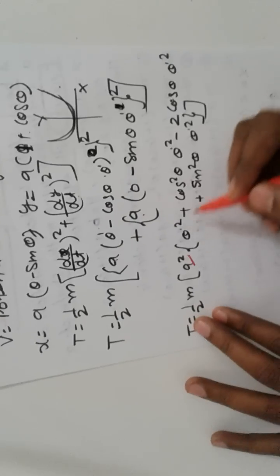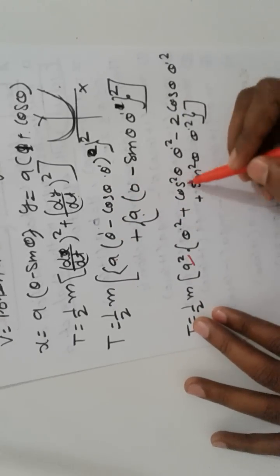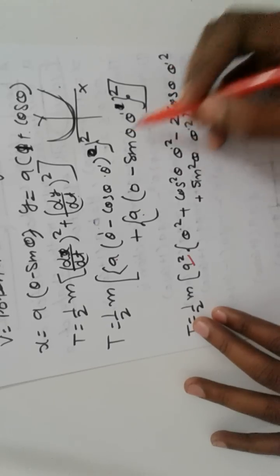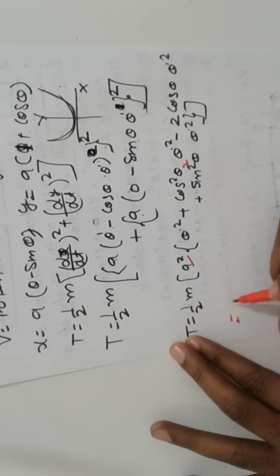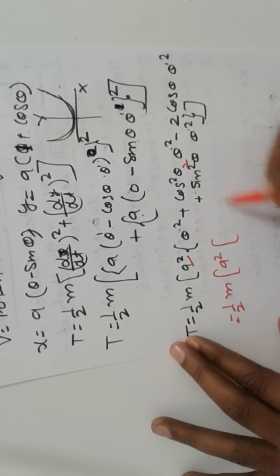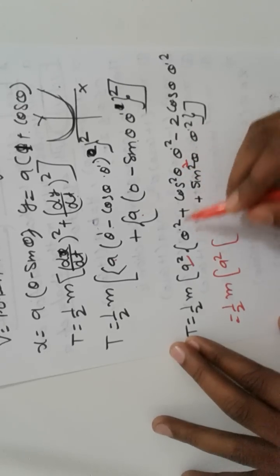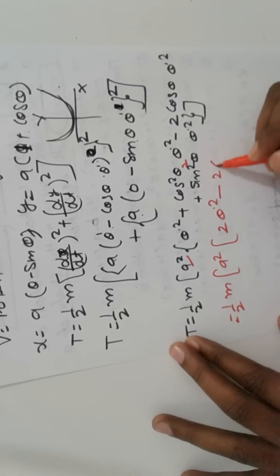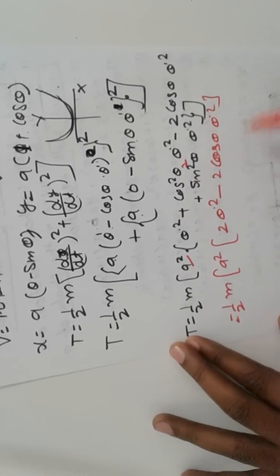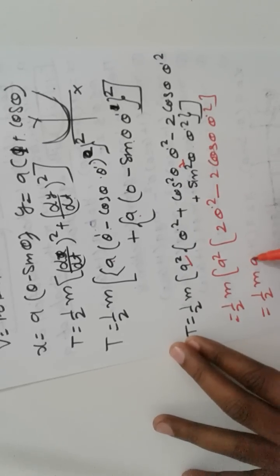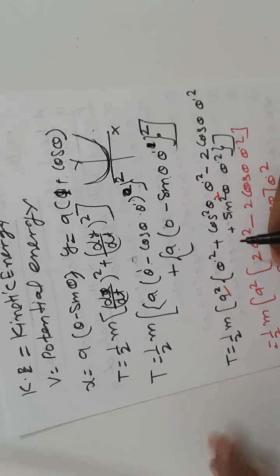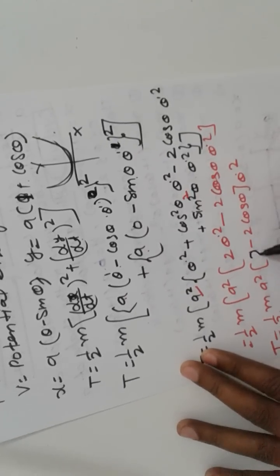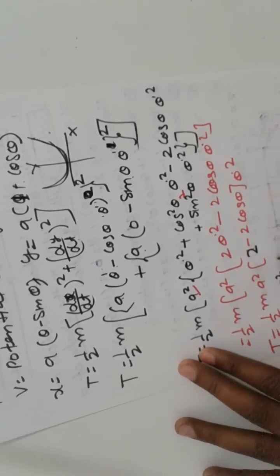Now opening this, a squared is taken common. We get theta dot squared, cos squared theta theta dot squared, minus 2 cos theta theta dot squared, plus sin squared theta theta dot squared. So combining: one-half m a squared times 1 minus 2 cos theta times theta dot squared. Two is common, so we get m a squared times 1 minus cos theta times theta dot squared. That is the value of T.